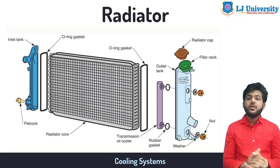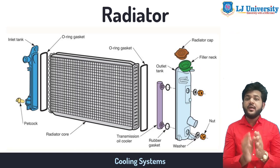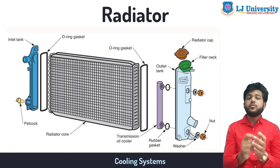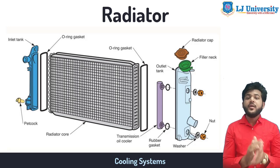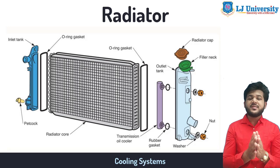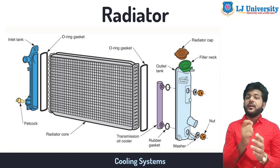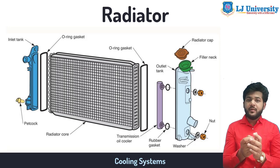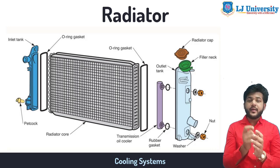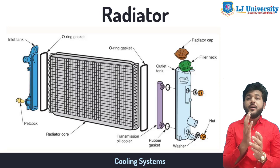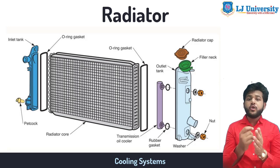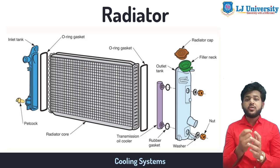The radiator is a type of heat exchanger. It is designed to transfer heat from the hot coolant flowing through it to the air blown through it by the fan. Most modern cars use aluminum radiators, made by brazing thin aluminum fins to flattened aluminum tubes. The coolant flows from the inlet to the outlet through many tubes mounted in a parallel arrangement. The fins conduct heat from the tubes and transfer it to the air flowing through the radiator.